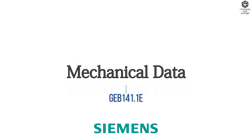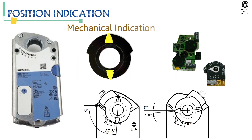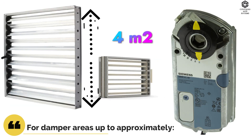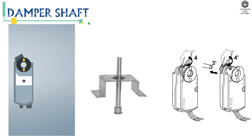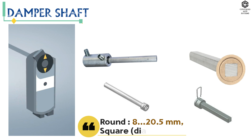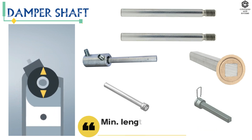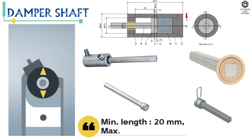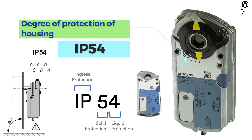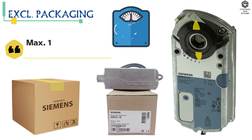Mechanical data: position indication is available in mechanical and electrical formats, for damper areas up to approximately 4 square meters. Damper shaft: round is 8 to 20.5 millimeters and square is 8 to 14.5 millimeters. Minimum shaft length is 20 millimeters, maximum shaft hardness is less than 300 HV. Degree of protection of housing is IP54.